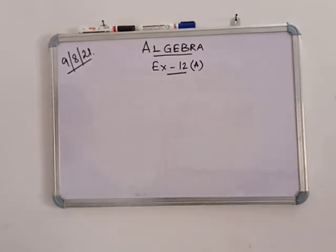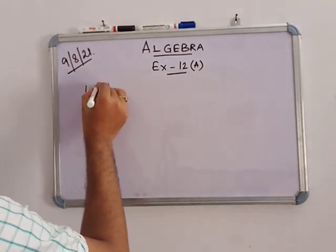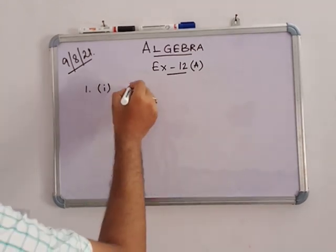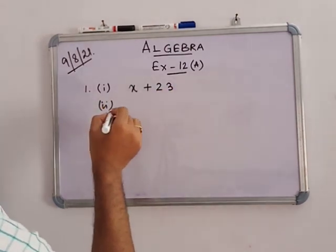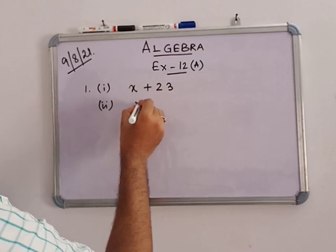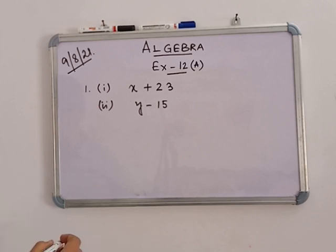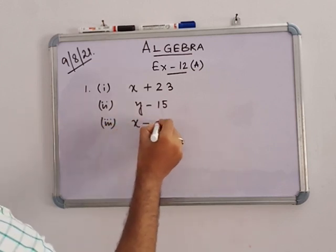Now in exercise 12a, number 1: write the following in mathematical form using signs and symbols. First: X increased by 23 means X plus 23. Second: Y decreased by 15 means Y minus 15. Third: X minus thrice Y means X minus 3Y.